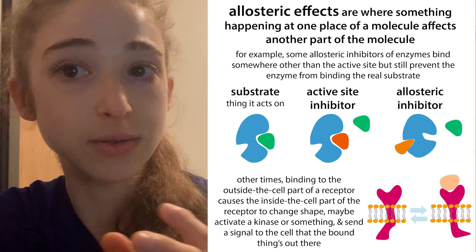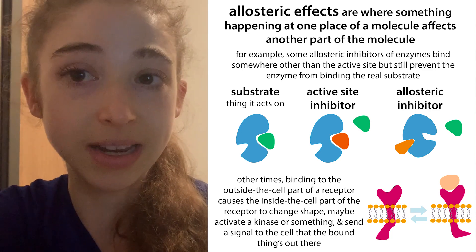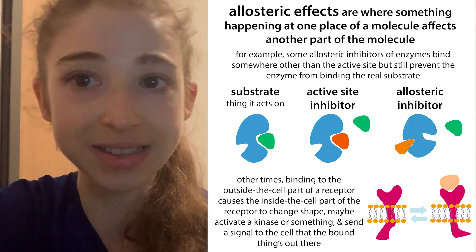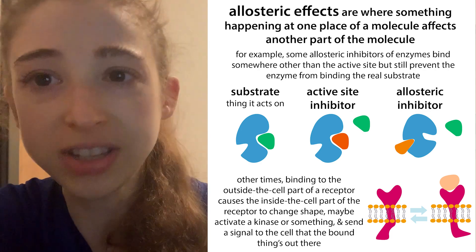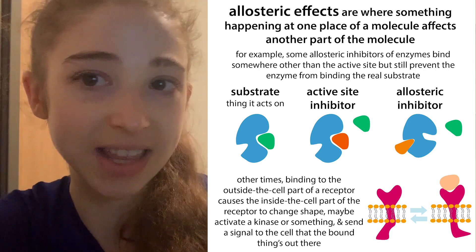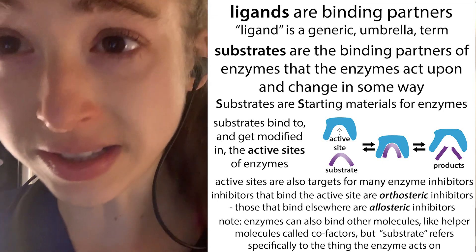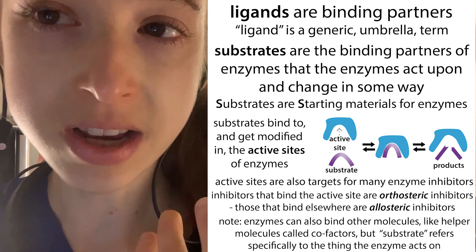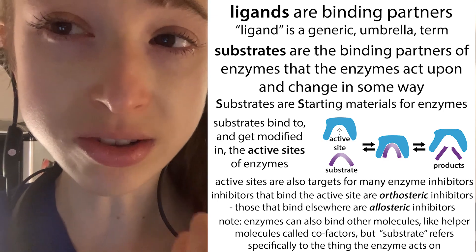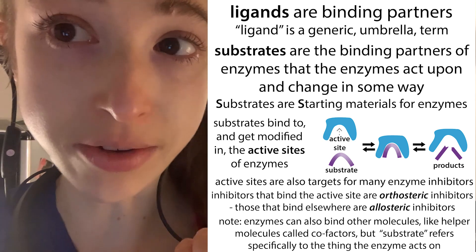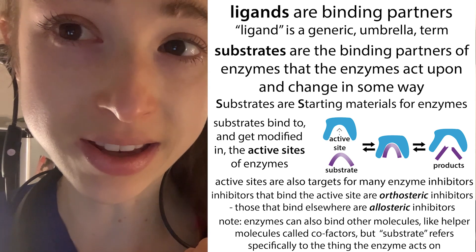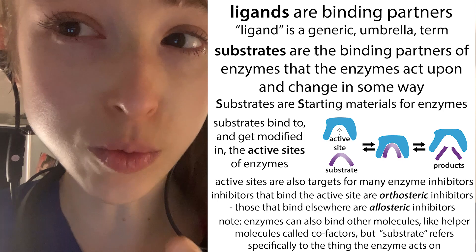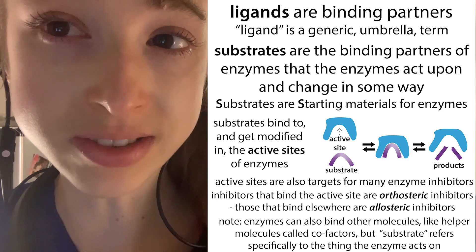We can have direct inhibition at the active site as well as allosteric inhibition or allosteric modulation. If a ligand is binding to the same site as the normal substrate — the active site — we can call it orthosteric binding. So allosteric means it's binding somewhere else, and orthosteric means it's binding at the active site.